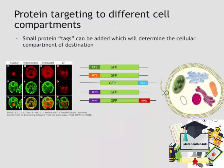This technology is available to us through something called protein tags. Protein tags are small protein sequences, typically around 4 to 20 amino acids, and they can be added to either side of the protein — the N-terminus or the C-terminus. These tags allow us to target proteins to different cell compartments.